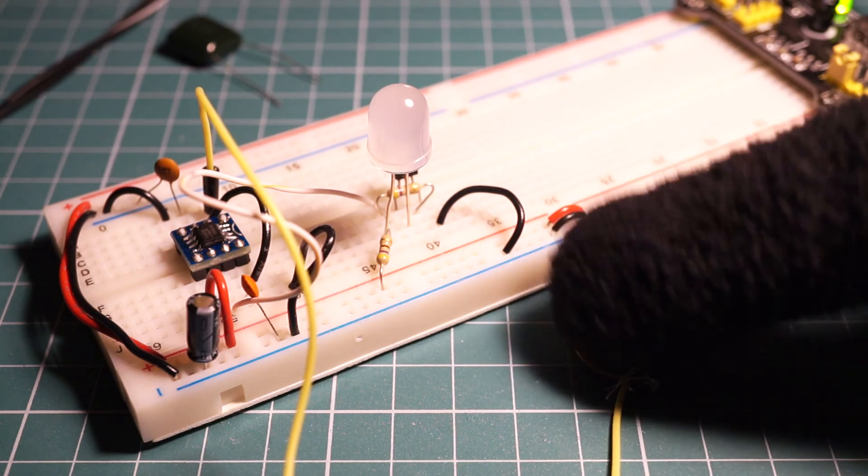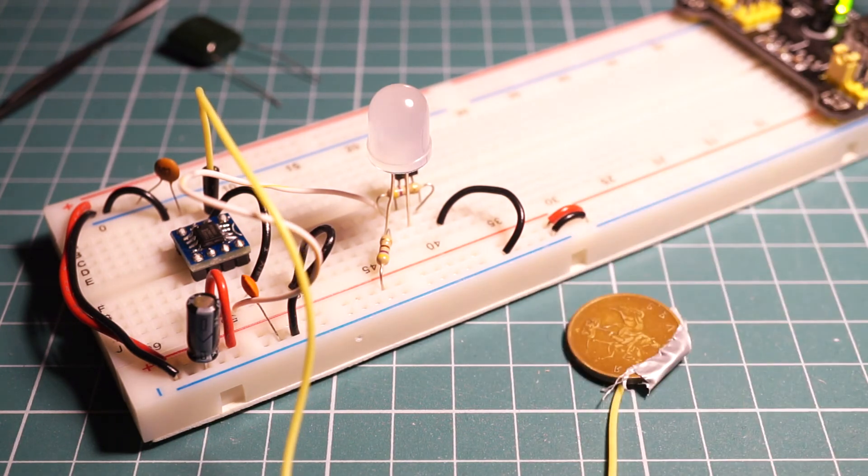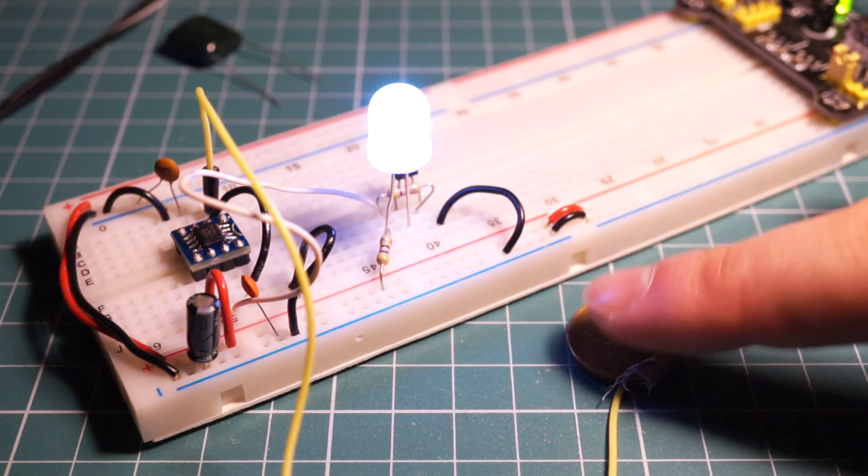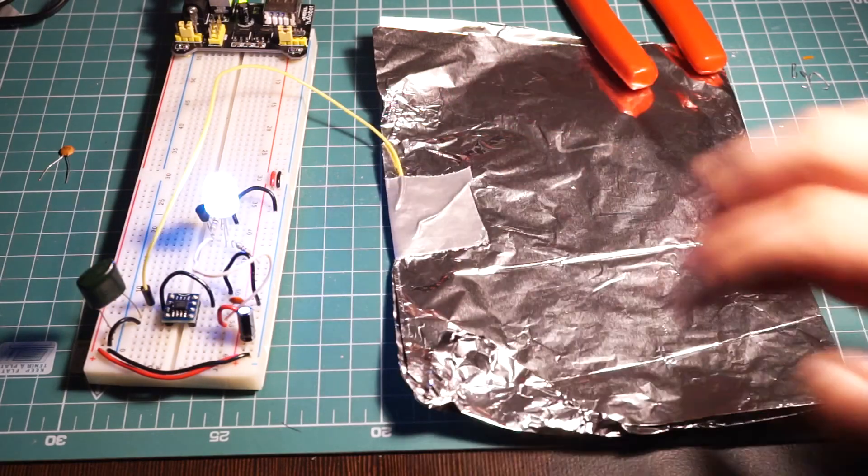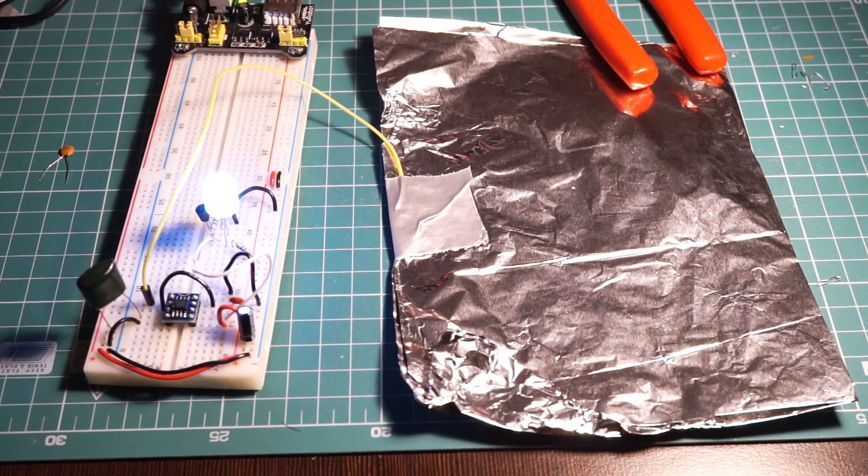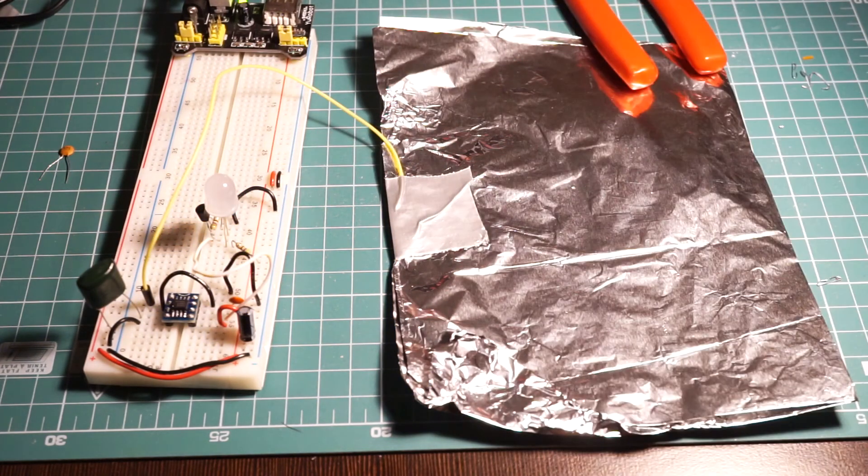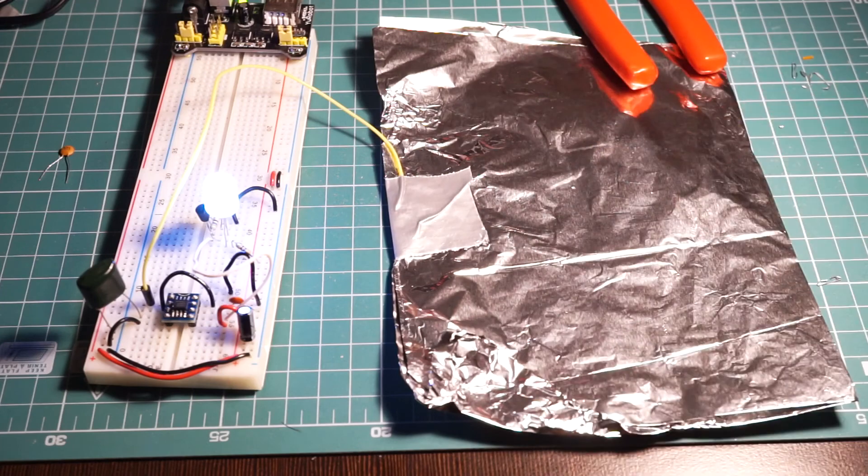As you can see, right now only my bare fingers are detected. And to increase the sensitivity, you can use a bigger capacitor. Or if it's possible, you can use a bigger metal plate. I replaced the penny with a piece of metal foil and as you can see, the chip can detect my hand from a distance.